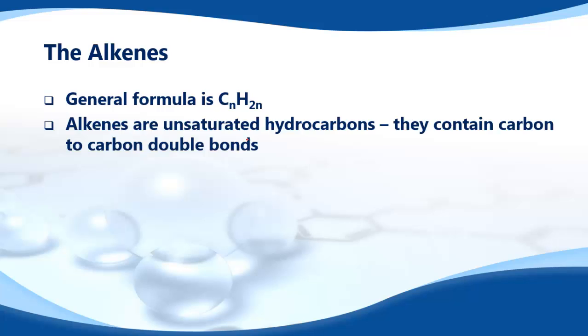In this video we're going to look at the alkenes. The general formula of the alkenes is CnH2n. Alkenes are unsaturated hydrocarbons. They contain carbon to carbon double bonds.